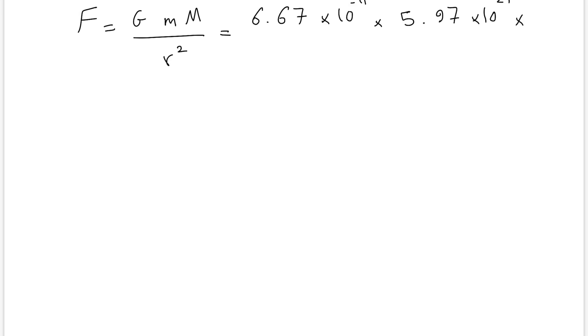And then we have the mass of Moon, which is 0.0735 times 10 to the 24. And this is divided by the distance between Moon and Earth, which is 3.84 times 10 to the 8, to the power of 2.